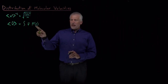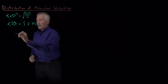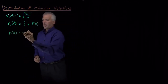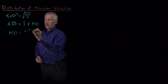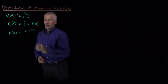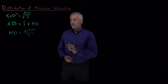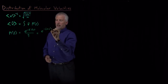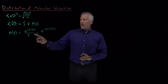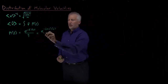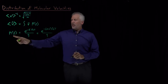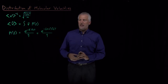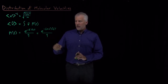With Boltzmann's help, we know how to calculate probability. The probability that a molecule has a particular velocity is e to the minus energy over kT, divided by a partition function. Since we're treating these gas molecules as having nothing other than kinetic energy, their energy is one-half mV squared. So the probability is e to the minus one-half mass times velocity squared divided by kT, all divided by the partition function.